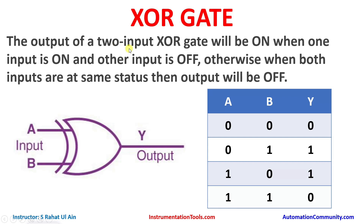The output of a two-input EXCLUSIVE OR gate will be ON when one input is ON and another input is OFF. Otherwise, when both inputs are at the same status, the output will be OFF.